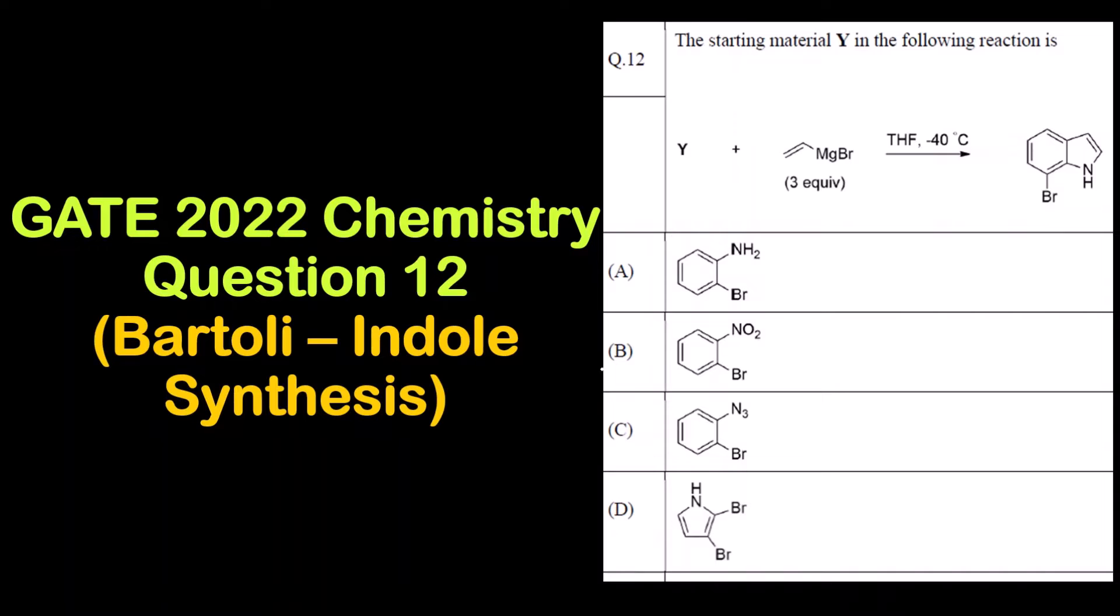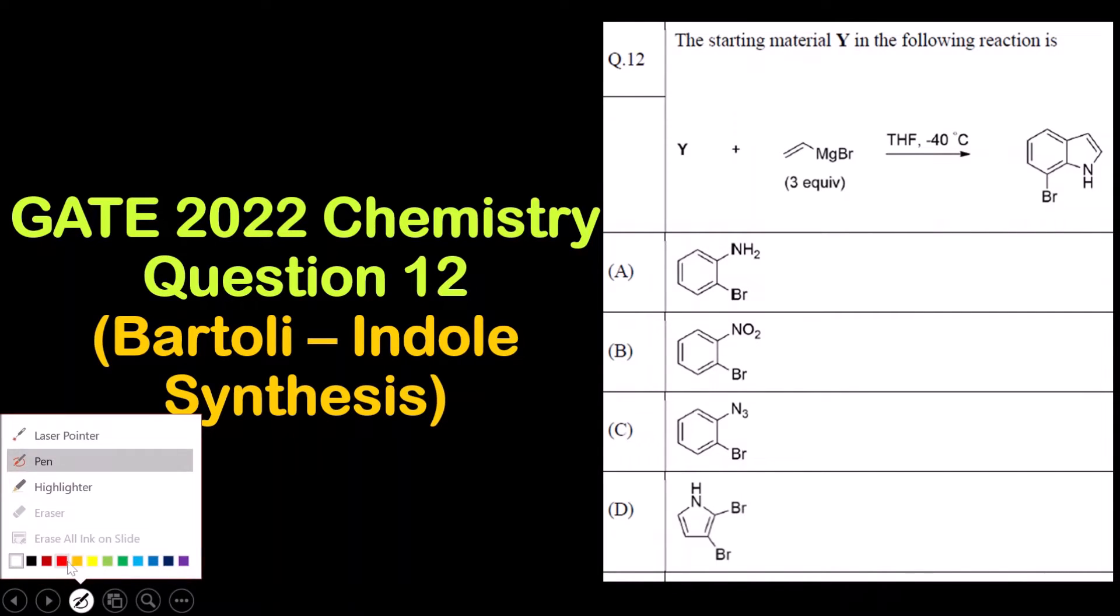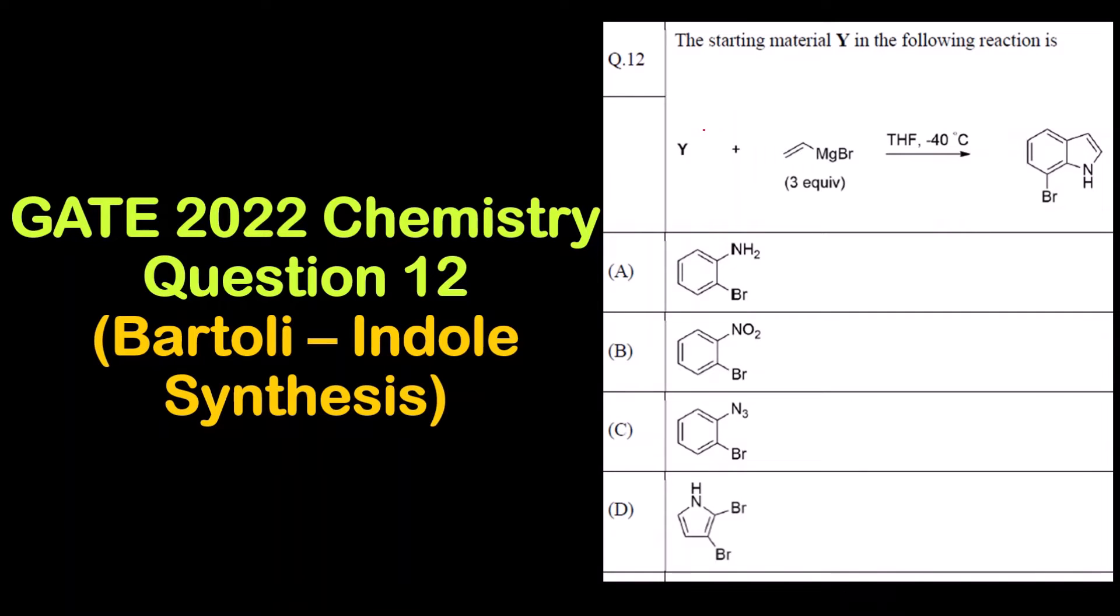Now if you see the mechanism of this reaction it is quite lengthy, so either if you know the reaction you can easily solve, or else the better option is you can leave this question because it is of only one mark and there is also negative marking of minus 0.33. This product is nothing but an indole derivative.